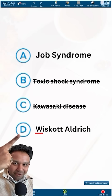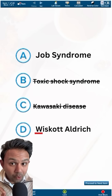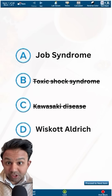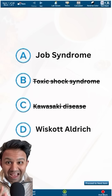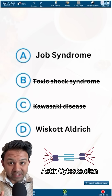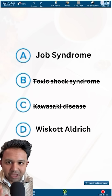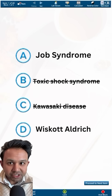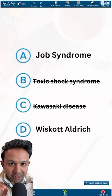W for Wiskott-Aldrich, W for WAS gene — it's a WAS gene mutation. You have bad actin cytoskeleton reorganization, which means you cannot present antigens on MHC class 1 or 2.